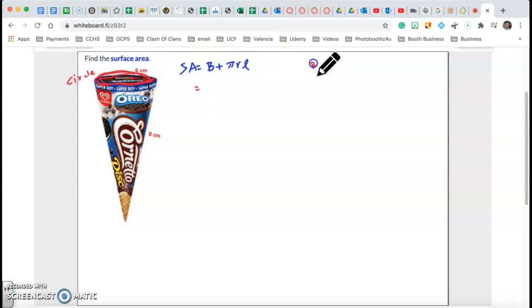So that base is going to be the area of that transversal, of that cut, which in this case is the area of the circle. And the area of the circle is pi times radius squared. So I'm going to replace the b by pi r squared.